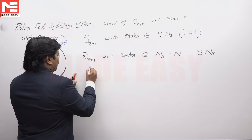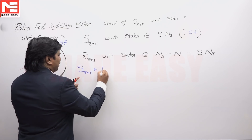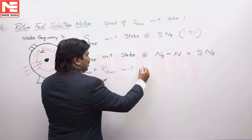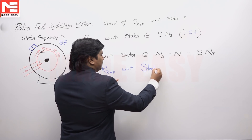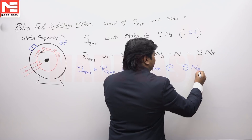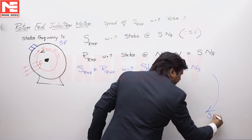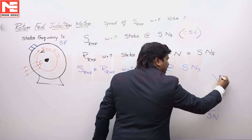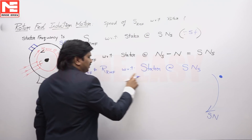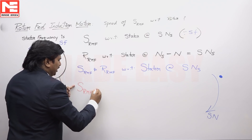So the absolute flux — stator RMF with respect to the stationary point — has a speed of s·Ns. That is what has been written.